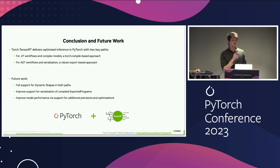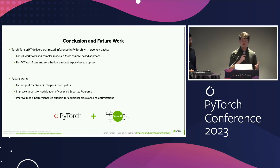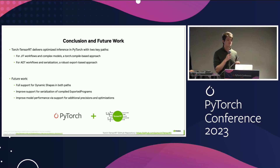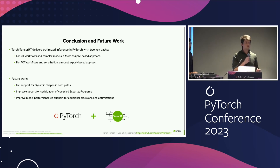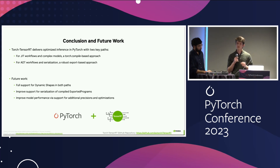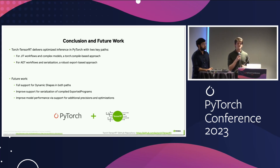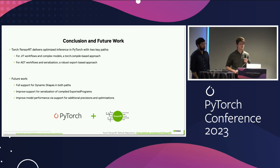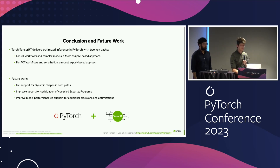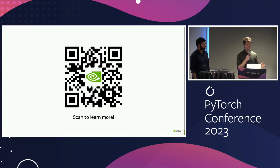To conclude, Torch TensorRT delivers optimized inference in-framework in PyTorch with two key paths. The first, the JIT plus flexible approach, works on complex models using a Torch.compile-based approach. The second, the AOT plus exportable approach, is best for models requiring serialization and uses a robust export-based approach. We're actively working on full support for dynamic shapes in both paths, improving serialization of exported programs, and improving model performance with additional precisions and other optimizations. Thank you very much for coming. Our GitHub repository link is at the bottom of the page and at the QR code. If you have any questions, feel free to reach out over GitHub or talk to us outside.